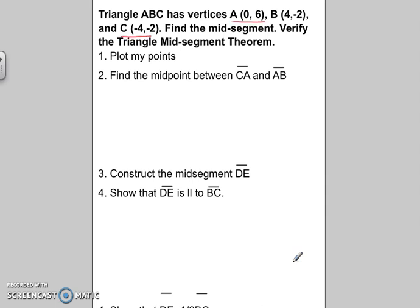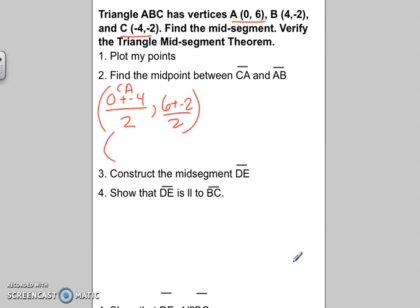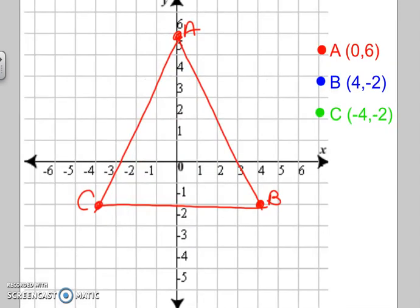For the midpoint of CA: 0 minus 4 is negative 4, divided by 2 gives negative 2. And 6 subtract 2 is 4, divided by 2 is 2. So the midpoint of CA is at (negative 2, positive 2). If I go to negative 2, positive 2 on the graph, there's the midpoint.